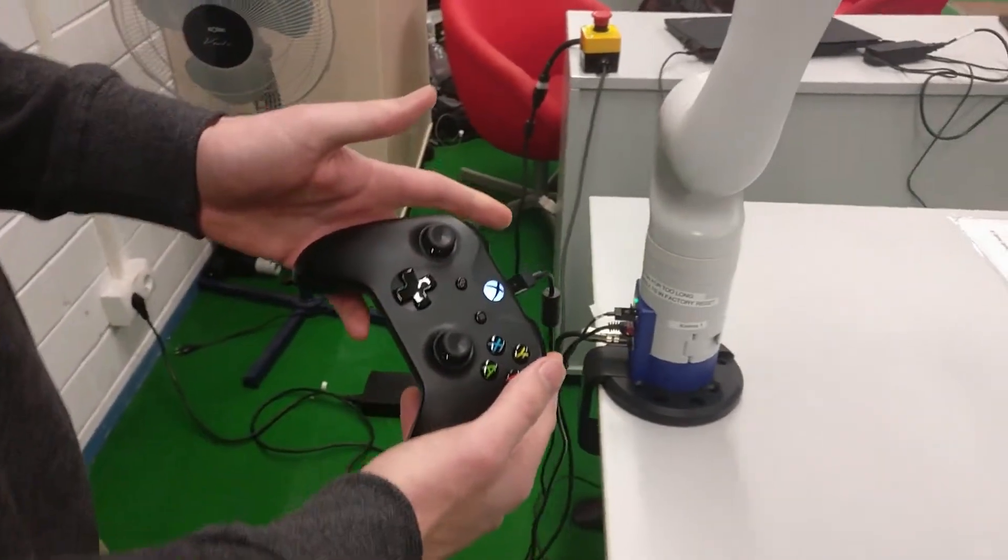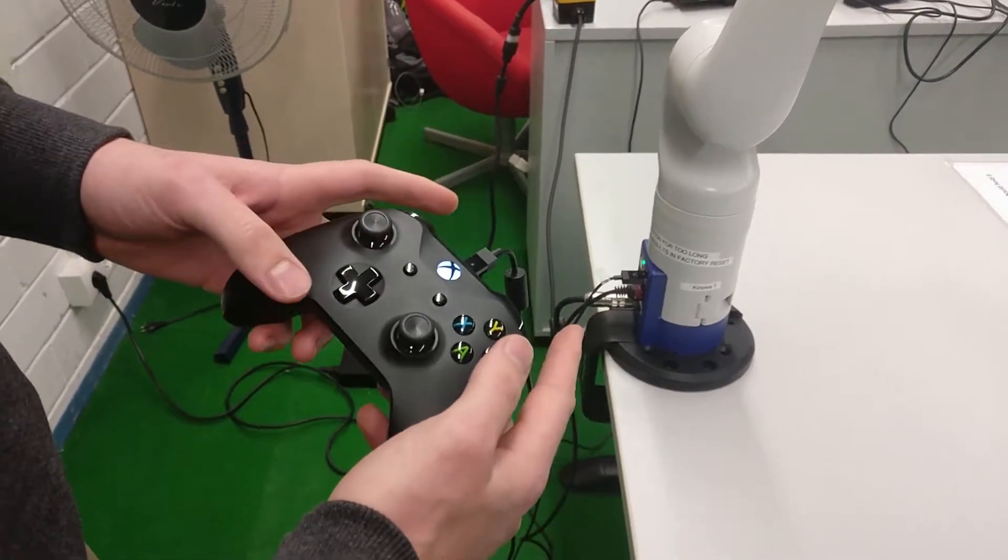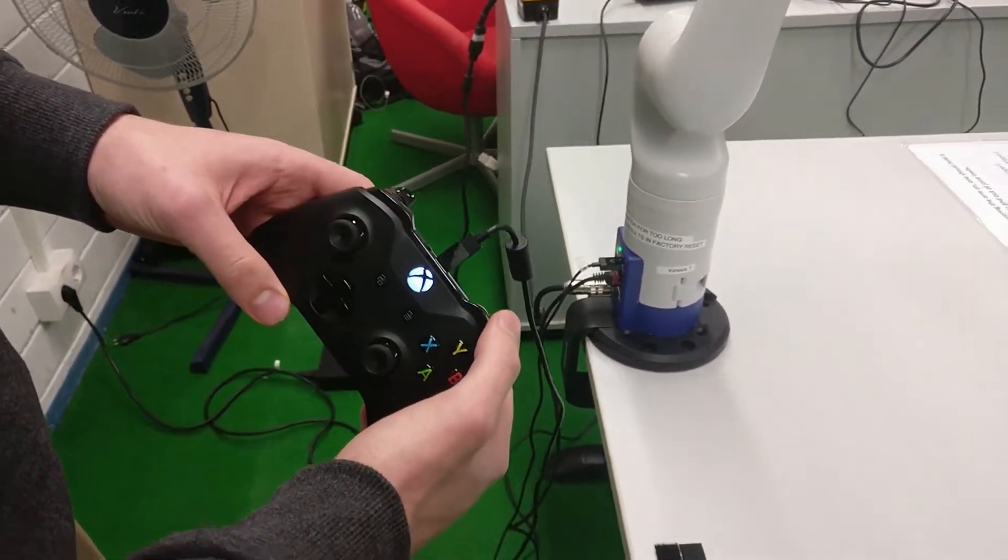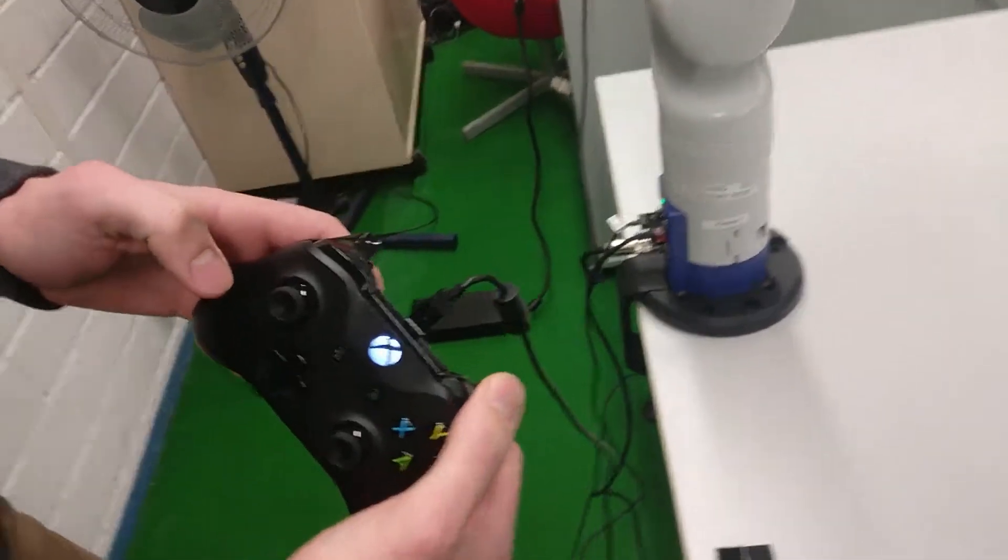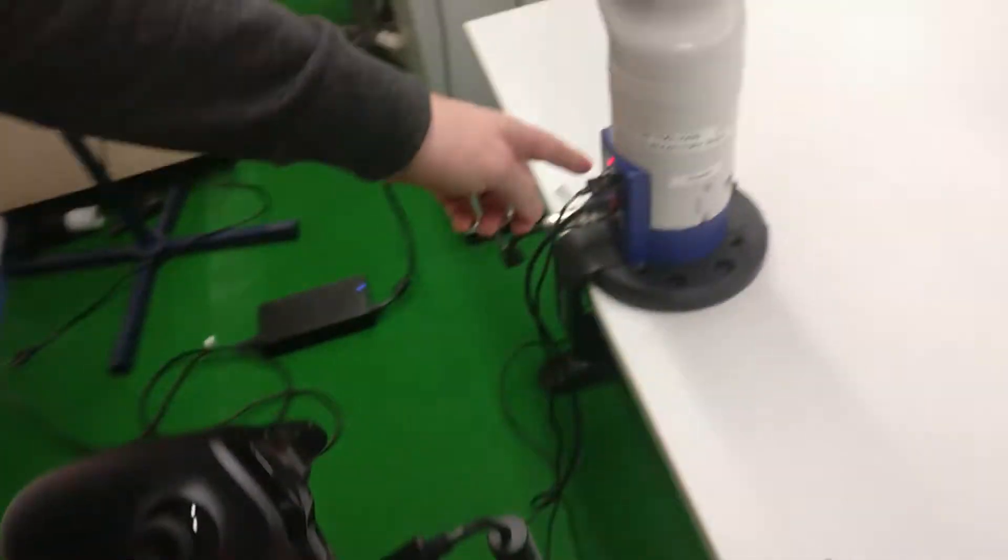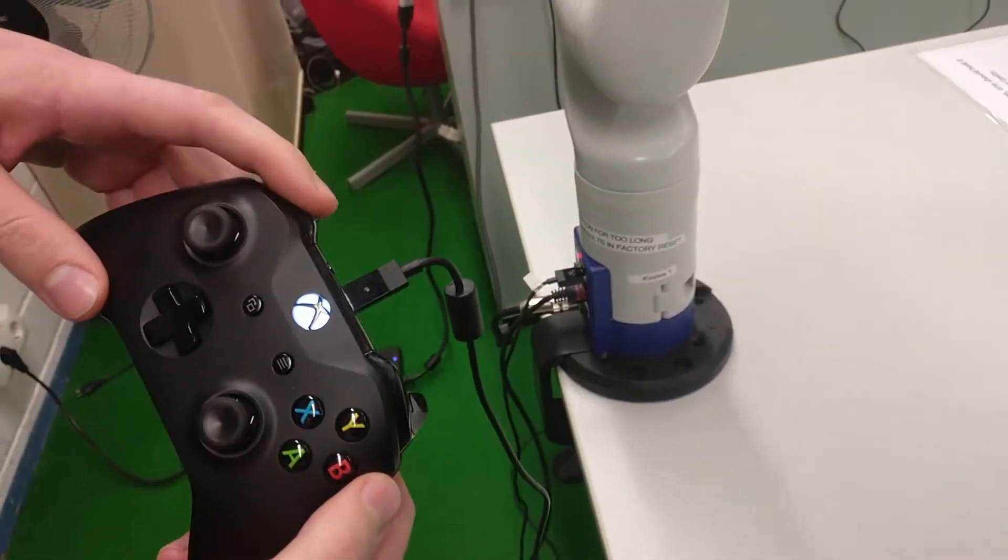The controls are quite basic, using the joysticks to control the arm. The most important ones are the safety soft stop here, where you can see the light turns red, and then resume, which is here.